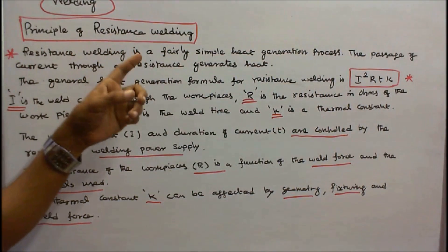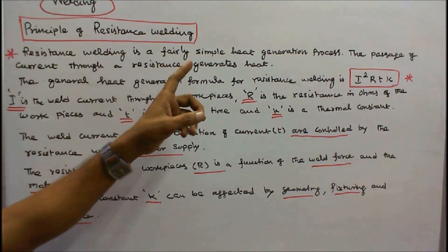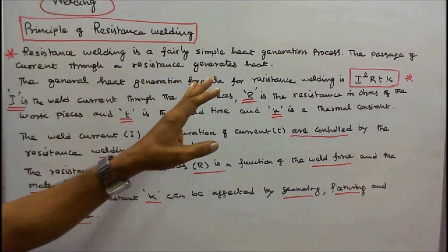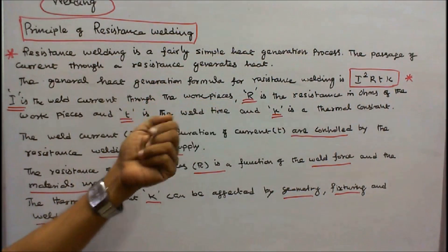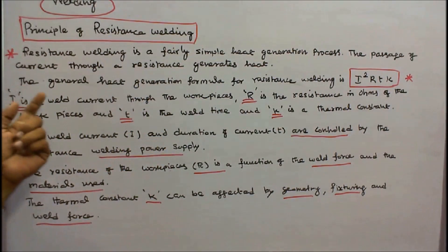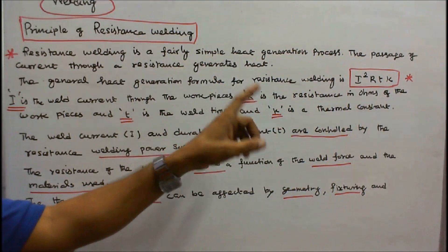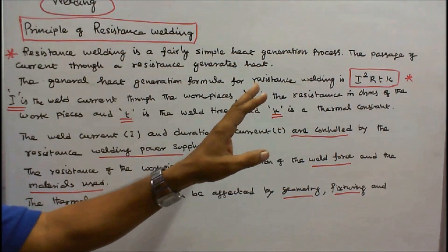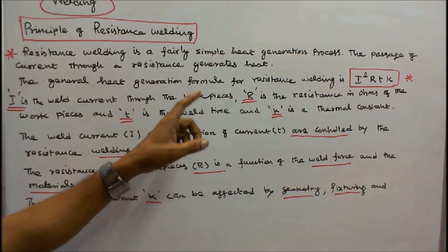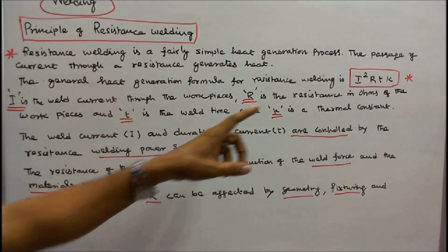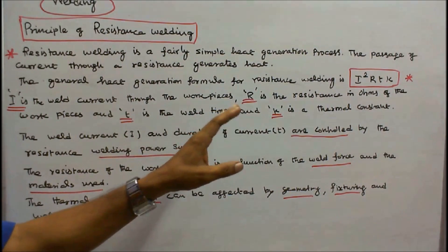Principle of resistance welding. Resistance welding is a fairly simple heat generation process. The passage of current through a resistance generates heat. The general heat generation formula for resistance welding is I² × R × T × K, where I is the weld current through the workpieces, R is the resistance in ohms of the workpieces, T is the weld time, and K is the thermal constant.